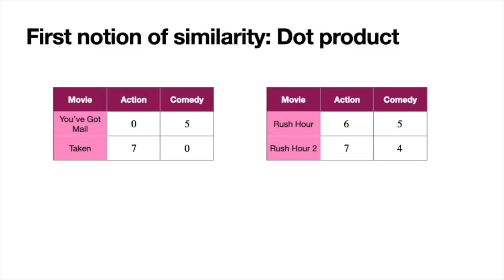We need a notion of similarity — a number that is high when sentences are similar and small when they're very different. The first notion we'll look at is dot product. Notice that similar movies have similar scores in each column, and we're going to exploit that. For the pair of different movies on the left, if we multiply the action values and the comedy values and add them — that's the dot product — we get a very small number, zero, because they don't match in either comedy or action. When the action is high for one, it's low for the other, so their products are very small.